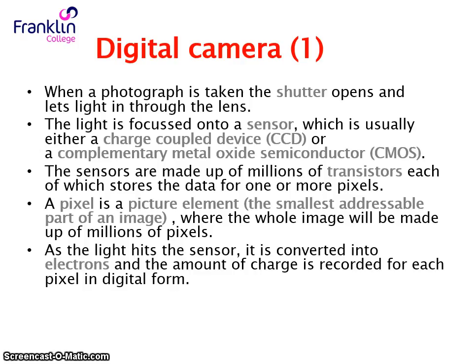When a photograph is taken, the shutter opens and it lets light in through the lens. The light is focused on a sensor — this is usually a CCD or a CMOS, a charge-coupled device or a complementary metal oxide semiconductor.